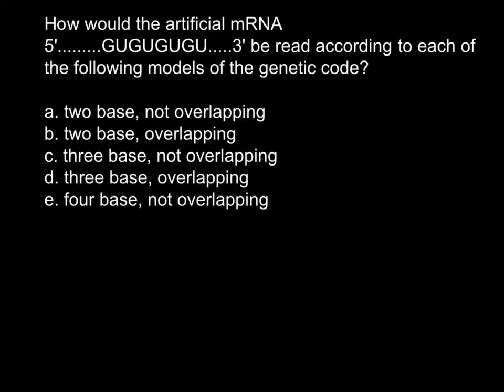Hi, today's question is: how would artificial messenger RNA that is present here be read according to each of the following models of the genetic code? We have five choices. You may stop the video here and choose your correct answer, then compare with my explanation.